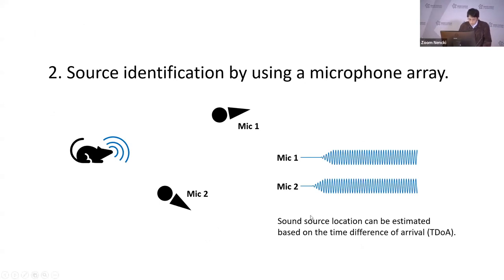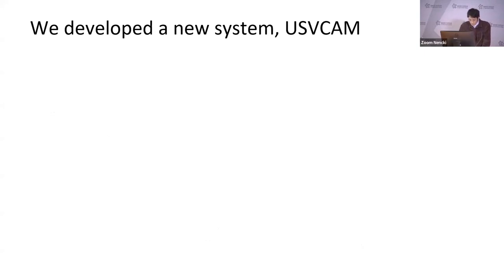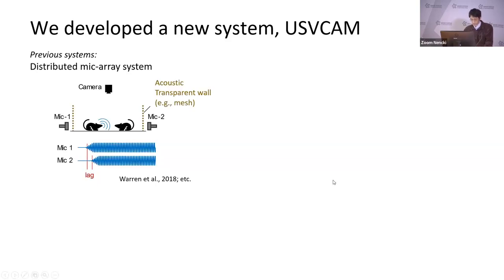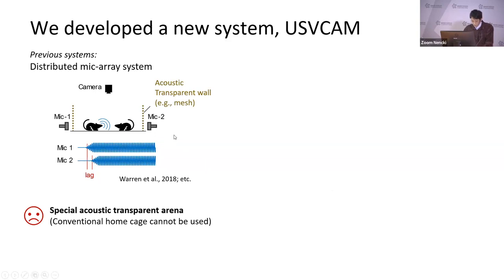So we tried another approach using a microphone array. Using multiple microphones, sound source location can be estimated based on the lag of the sound arriving at each microphone. Sound localization systems for USVs have already been suggested by some groups. But here we tried to develop a new system to make it easier and more applicable. In the previous system, microphones are arranged surrounding the recording arena, and this setup requires the use of a special arena with acoustic transparent walls, making it difficult to use a conventional plastic home cage.